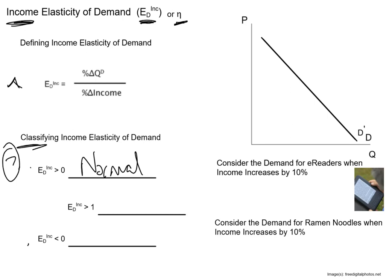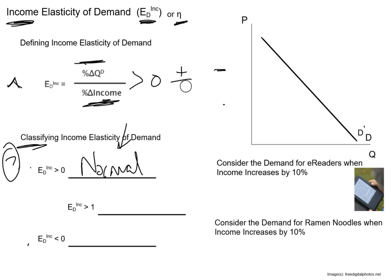The income elasticity is the ratio of these two percentage changes. It's going to be positive in two cases: if we have a positive numerator divided by a positive denominator, or a negative numerator and a negative denominator. Either way, when income increases, quantity demanded also increases, or when income decreases, quantity demanded decreases — a direct relationship between income and quantity demanded. That's exactly how we defined normal goods earlier.